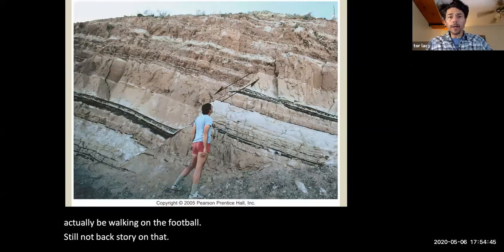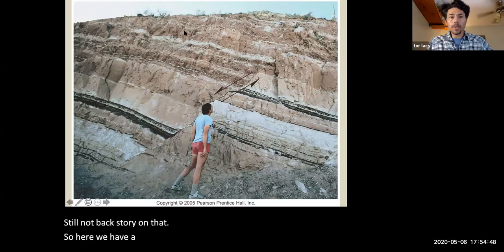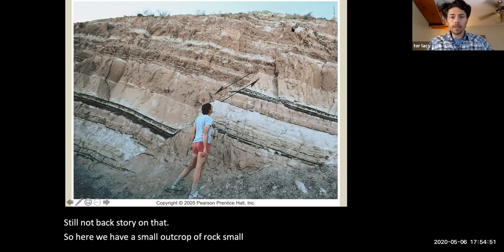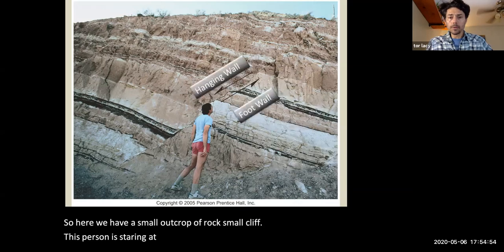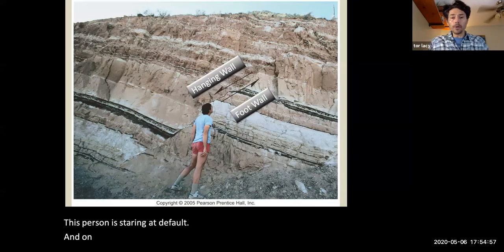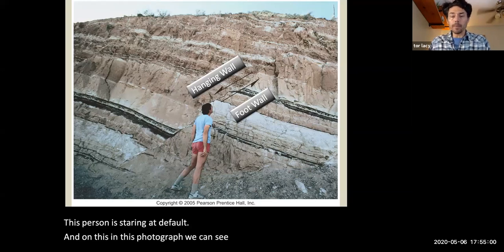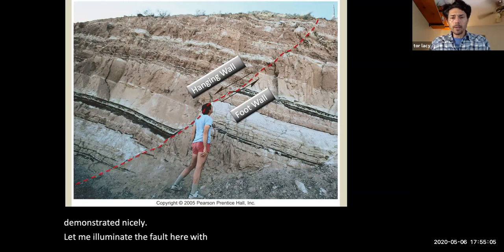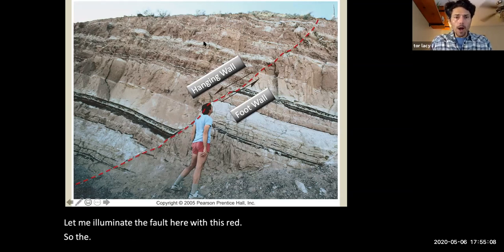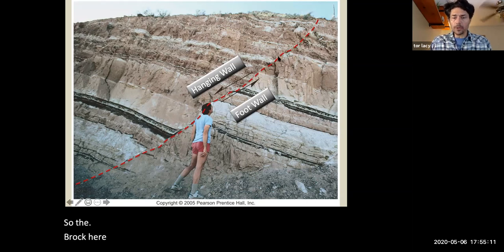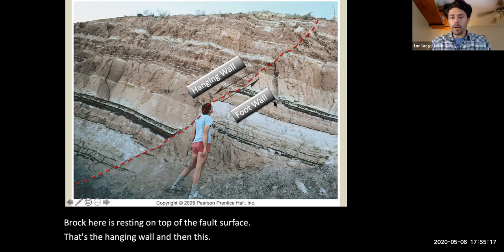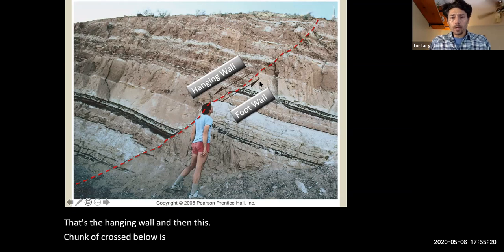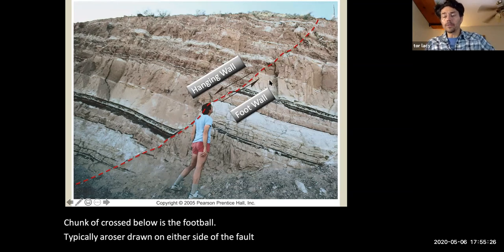So here we have a small outcrop of rock, a small cliff. This person is staring at the fault. And in this photograph, we can see the hanging wall and foot wall demonstrated nicely. Let me illuminate the fault here with this red. So the rock here is resting on top of the fault surface. That's the hanging wall. And then this chunk of crust below is the foot wall. Typically, arrows are drawn on either side of the fault to indicate the direction the fault is moving.